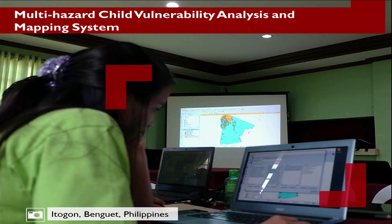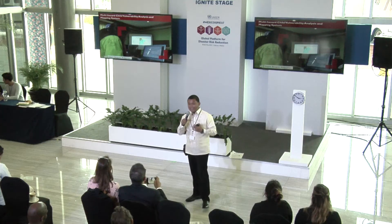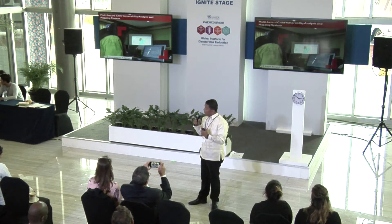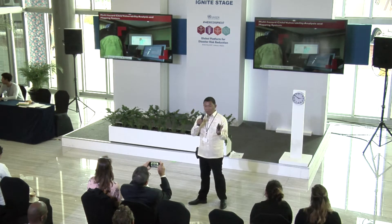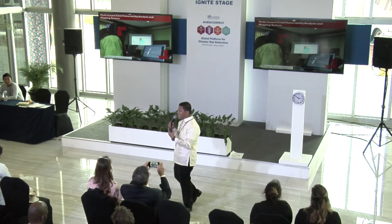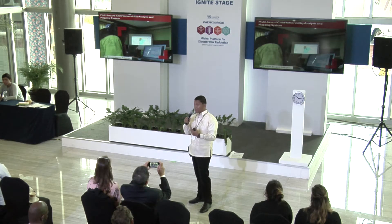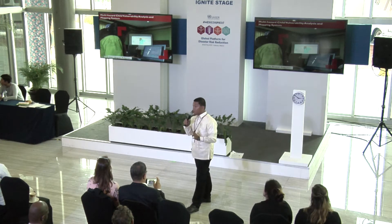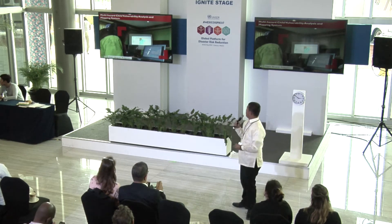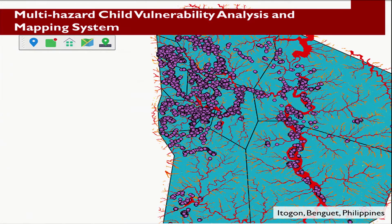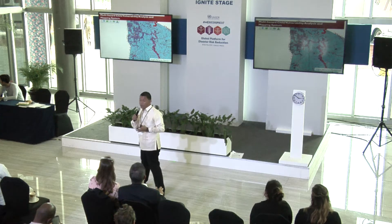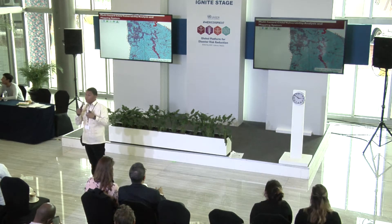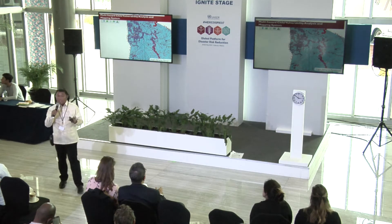So we started working with this multi-hazard child vulnerability analysis and mapping system. It's quite complicated, but essentially it's a computer mapping system that allows us to collect and gather data on information helpful in disaster risk reduction — information on hazards, vulnerabilities, and capacities, especially indicators concerning children that can be used to protect and provide for the needs of children before, during, and after disasters. So what we have here is a GIS or a computer map produced outside the community by local government offices and mandated government agencies.